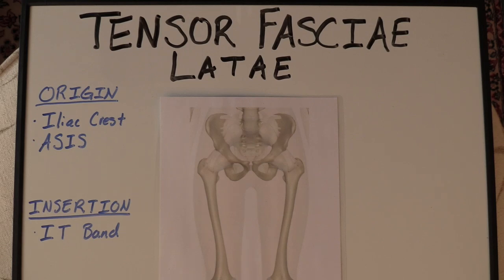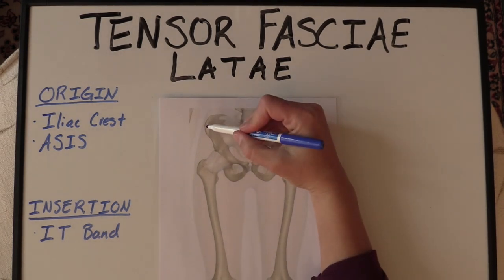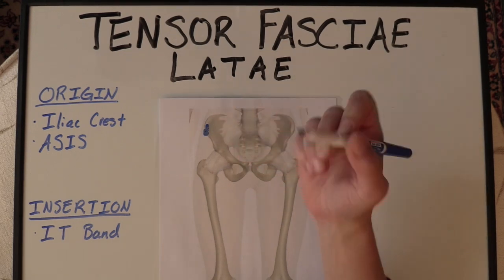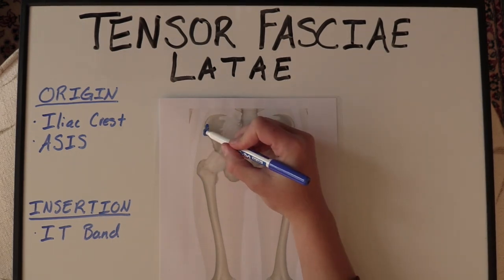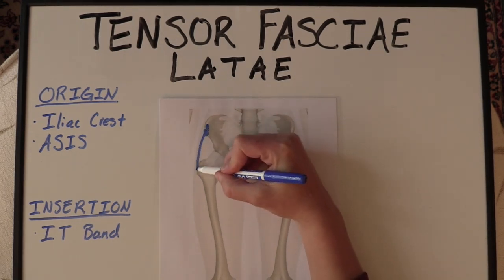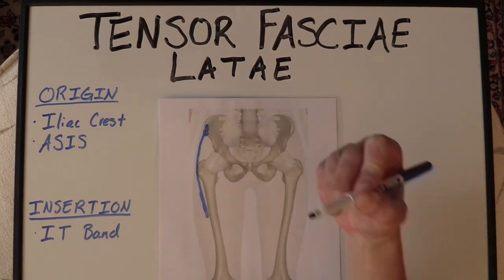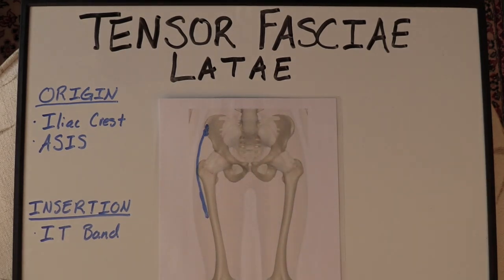Today we're going to talk about the Tensor Fascia Latae, our TFL. It originates on the anterior portion of the iliac crest and part of the ASIS. It inserts on the IT band on the lateral side of the femur.